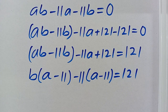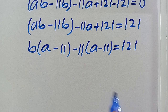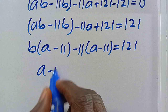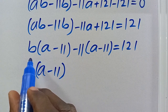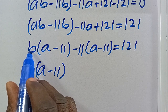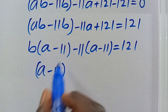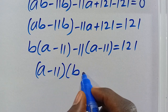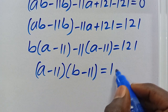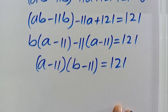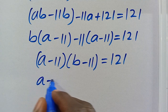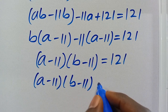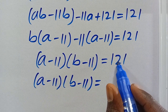Since (A minus 11) is common to both terms, we factor it out to get (A minus 11)(B minus 11) equals 121.